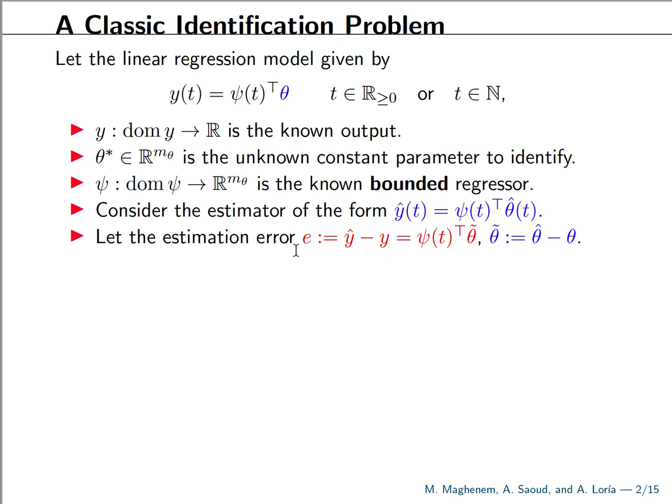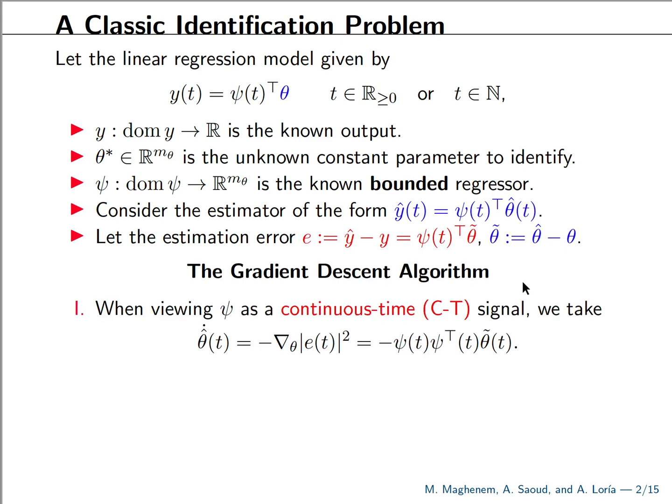Then we can define two errors, the output errors and also the estimation errors. There are two ways in the literature to update or to design a dynamical behavior for the estimate of the parameter. The first one is when viewing the regressor as a continuous time signal and we take this update law that minimizes the error of the outputs.